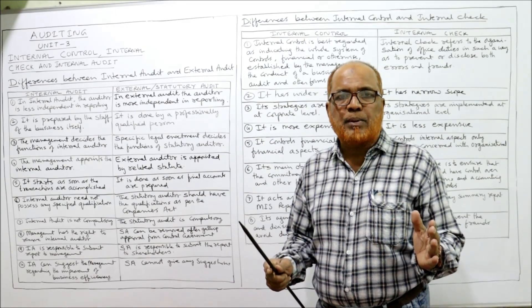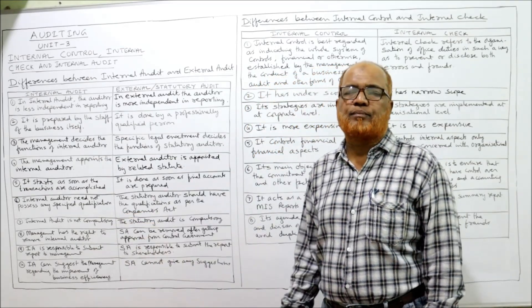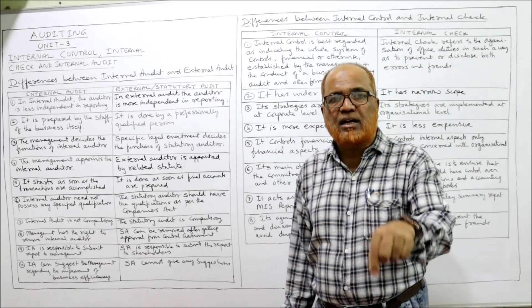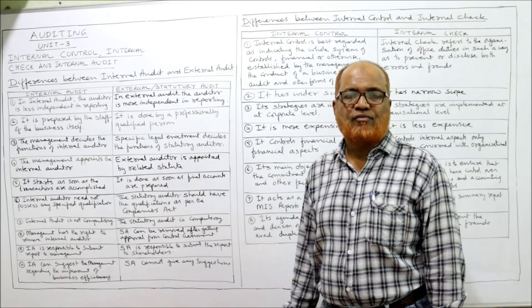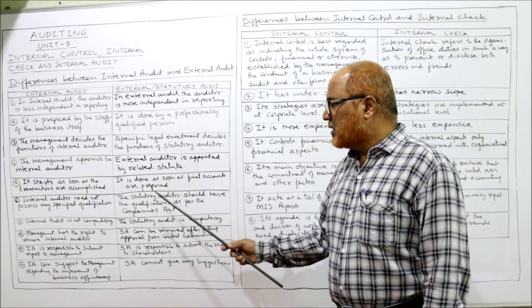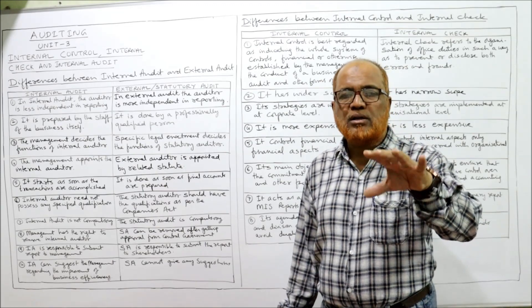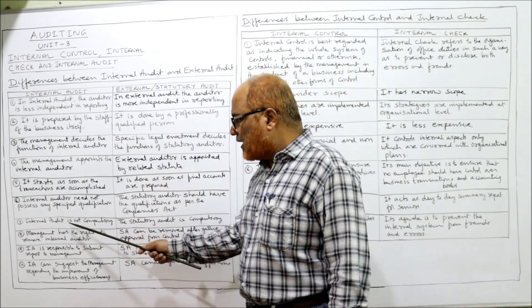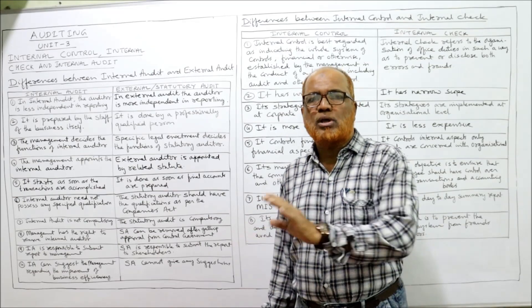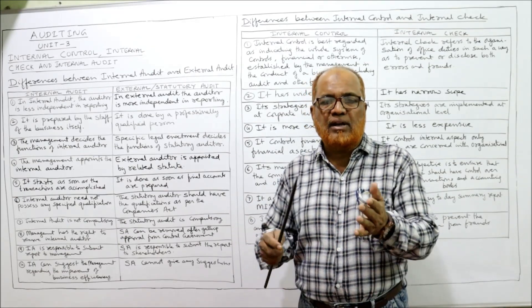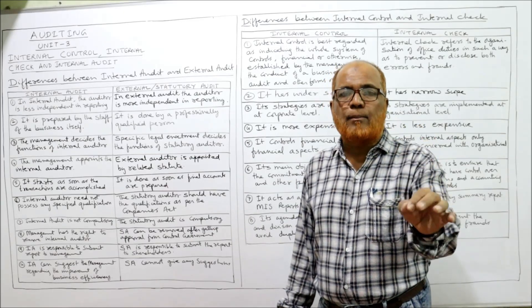Sixth difference: qualifications. The internal auditor need not possess any specified qualification — there are no specific qualifications required. Whereas specific professional qualifications are specified by statute for the external auditor, as laid out in the Companies Act. Seventh difference: compulsory nature. Internal audit is not compulsory; if management decides, they will conduct it, otherwise it is not required. Whereas external audit — statutory audit — is compulsory by law.